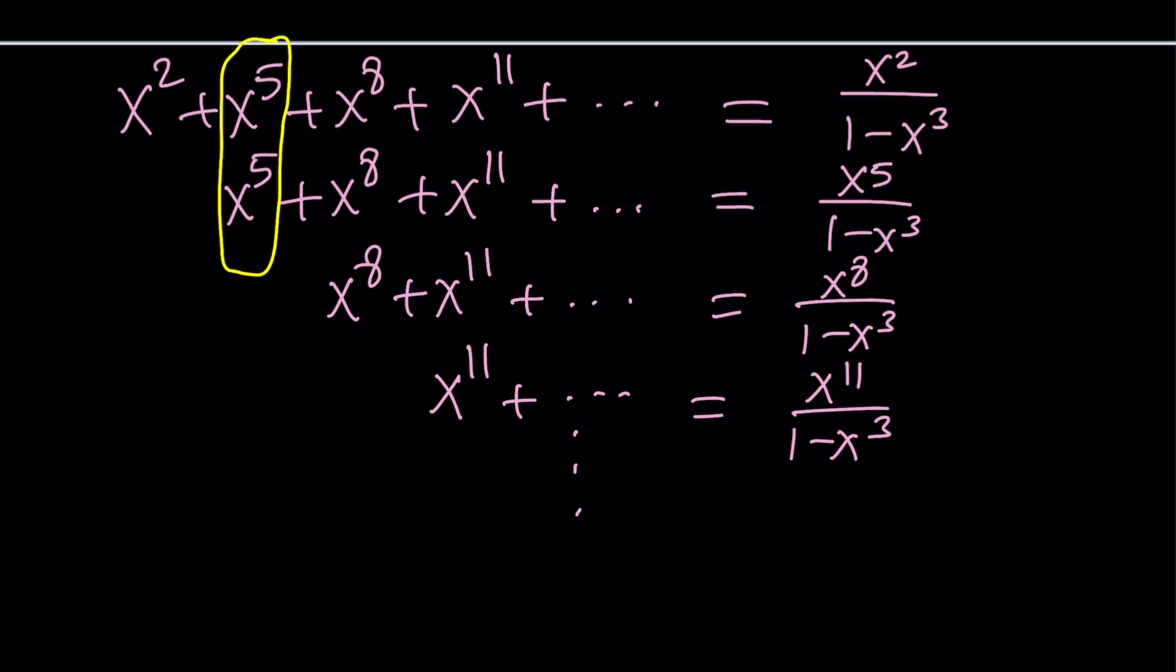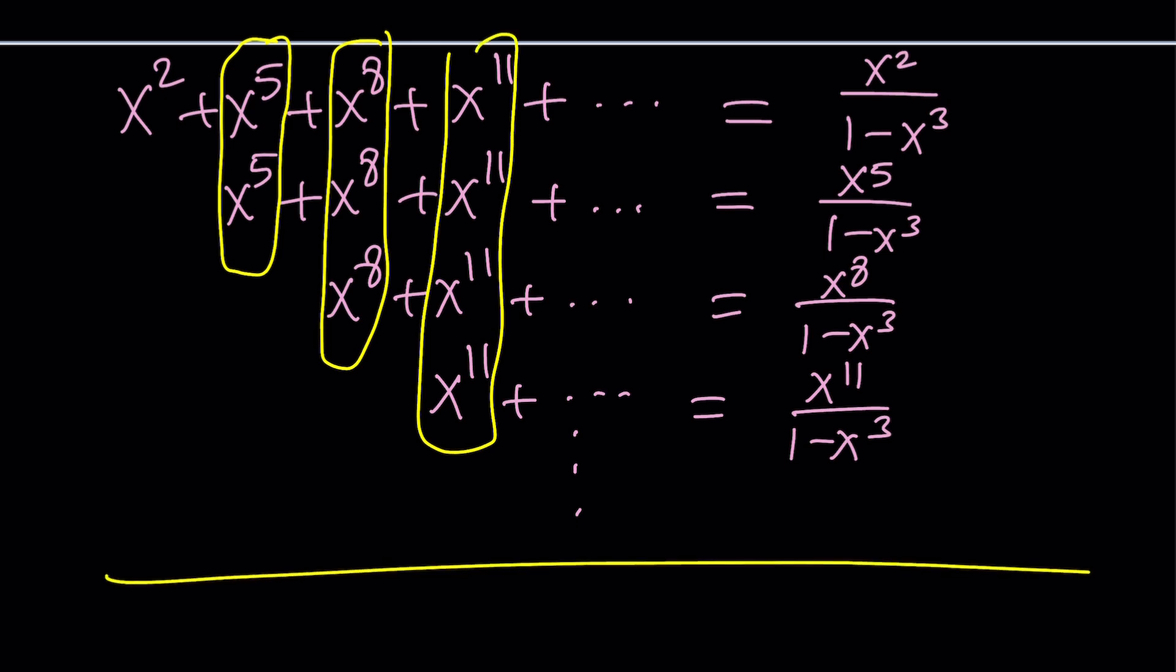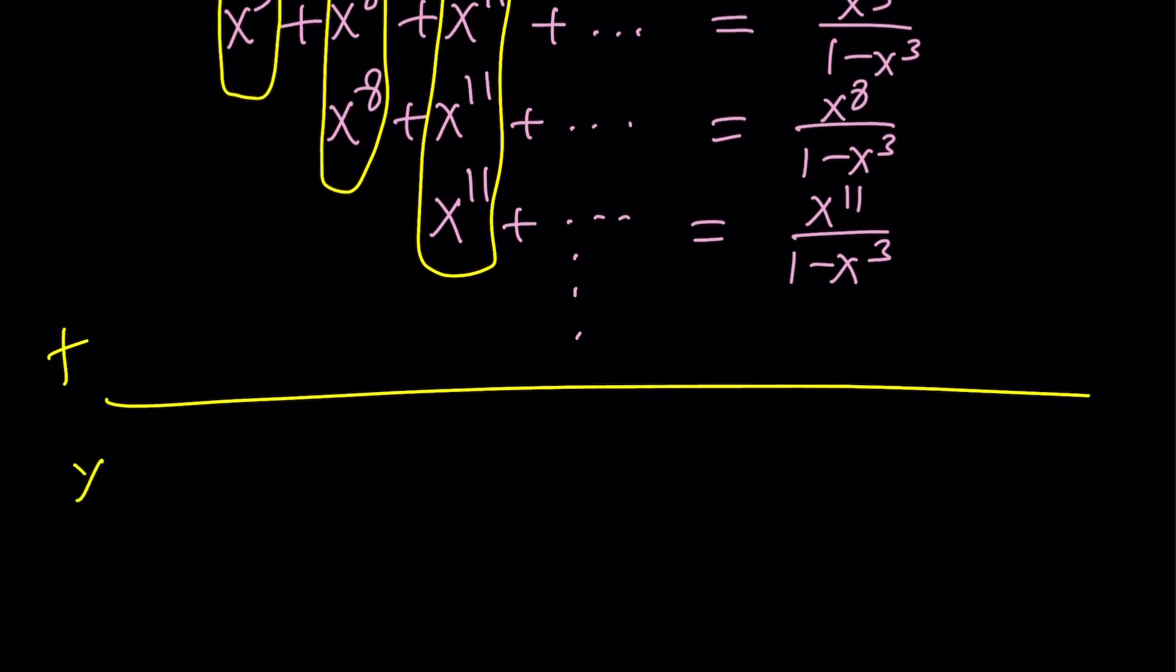You get the idea? This will continue. Of course, it's going to stop at x to the 11th, but after that, x to the 14th, we're going to have to add one more and keep doing this. Kind of like an upside-down pyramid, or kind of like a triangular style. Make sense? Now, when you add these terms, you're actually going to get what you want, or what we want.